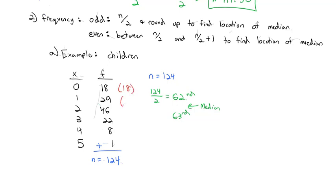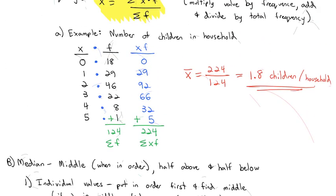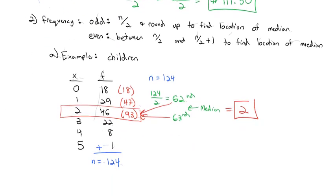So I'll just work down my frequency until I get between 62nd and 63rd. We've got 18 zeros. 18 plus 29 tells me we've got 47 numbers by the time we exhaust all the ones. We need the 62nd and 63rd, so we need to keep going. So when we do the 46 twos, that's going to get me all the way to the 93rd value. Notice 63 was in there and 62 were in there. That means both of those numbers were 2s. So my median is equal to the value 2, which is between the 62nd and 63rd value. Notice that median of 2 is a little bit more than the mean of 1.8. They are different most of the time. Usually they're close, but not always.